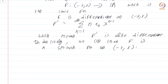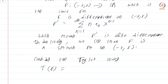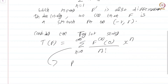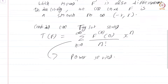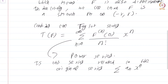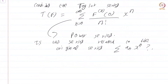Now consider the Taylor series T of f, which is summation of the nth derivative of f at 0 divided by n factorial, times xⁿ, n equals 0 to infinity. This is also a power series. Is this series related to the original series summation aₙxⁿ? That is a very natural question. In fact, the original series is nothing but this Taylor series.